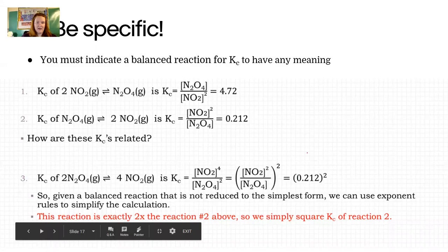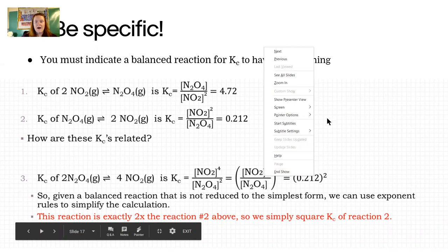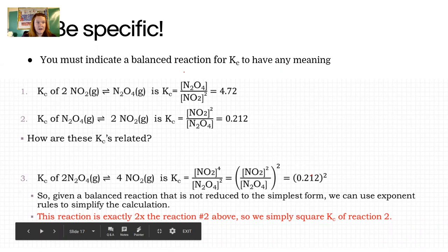Now that we know what a K is and how it's defined as products over reactants, the next thing is to realize that since these reactions are reversible, you have to be super careful to define specifically what reaction you're talking about. Every time you write a K, if the reaction is not given to you in the problem, you've got to write one down.